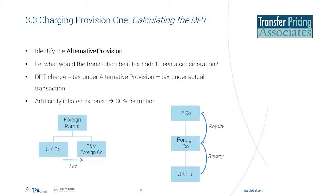The HMRC guidance considers that the alternative transaction — in absence of any tax considerations — would be that the UK company would have purchased the plant and machinery itself, so there would be no deduction for the lease payments. The full amount of the lease payment is your diverted profits, though you can reduce that amount with any notional capital allowances. The issue with HMRC guidance is that examples are quite narrow — they don't consider the scenario where the foreign company purchases plant and machinery for all trading companies on a European or global basis. If that were the case, it's arguable that the alternative provision would be the same as the actual provision.